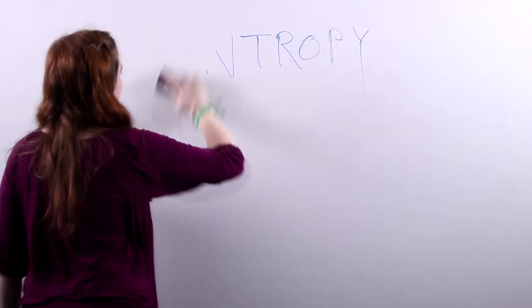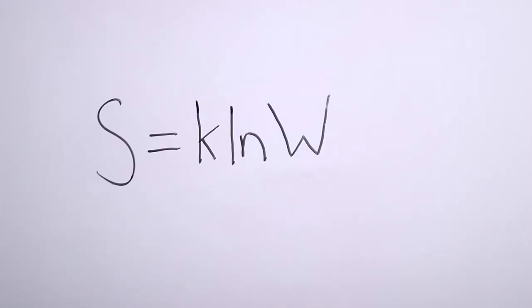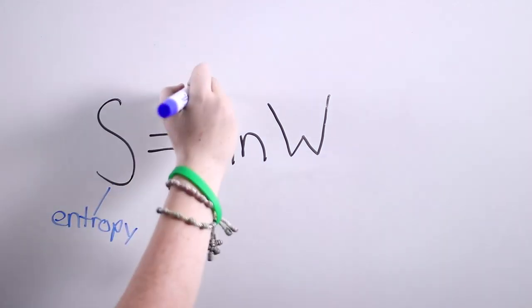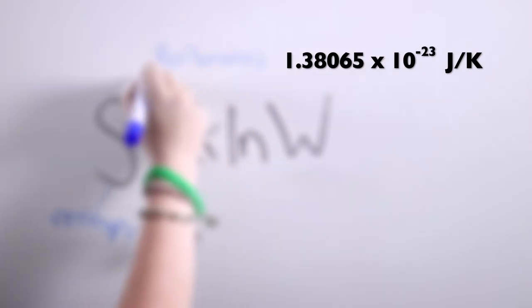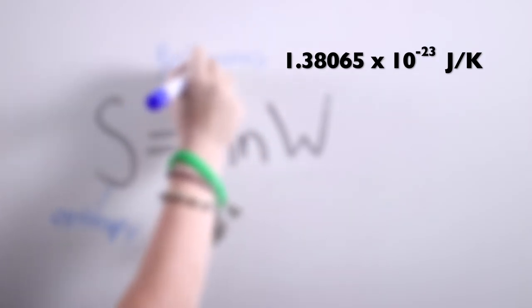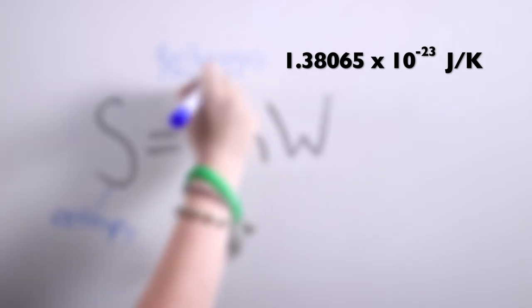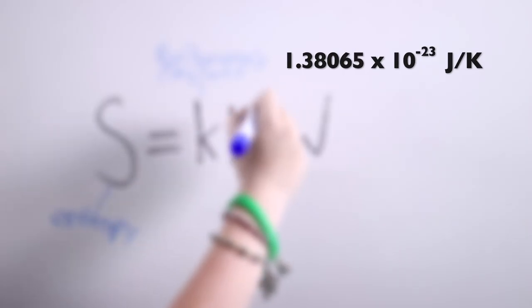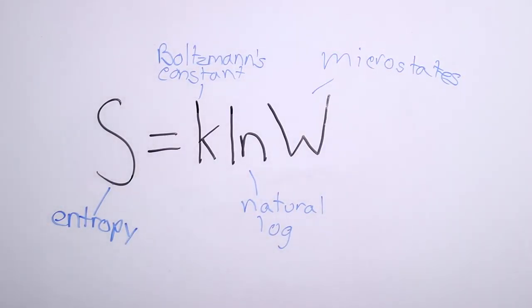Entropy. The Boltzmann formula is S equals k times ln(W), S being the entropy, k being Boltzmann's constant, or the number 1.38065 times 10 to the negative 23rd joules per Kelvin. This allows you to calculate the average energy and therefore the average speed of gas molecules. The ln(W) is the natural log of the number of microstates, which is calculating the total number of configurations.